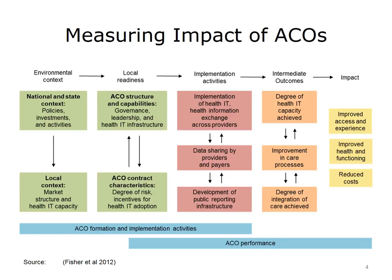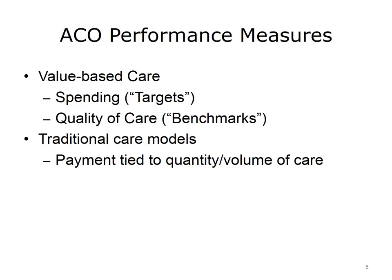These reflect what is known as the triple aim. The second column to the right lists three important intermediate outcomes of ACOs: the degree of health information technology achieved in ACOs, the improvement in care processes, and the degree of care integration achieved by the ACO. To achieve the desired impact and outcomes, ACOs will need to implement health information technology and health information exchange across programs and entities, achieve robust data sharing by providers and with payers, and develop the infrastructure to support public reporting on quality and spending performance.